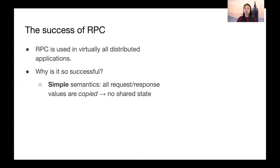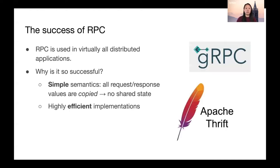The semantics are also simple in that all values in the request and response are copied, meaning there's no shared state between the client and server. That's part of the reason why we have such efficient RPC implementations today like gRPC and Apache Thrift. No shared state means no distributed coordination, so it's a lot simpler to build scalable and low-latency systems for RPC.